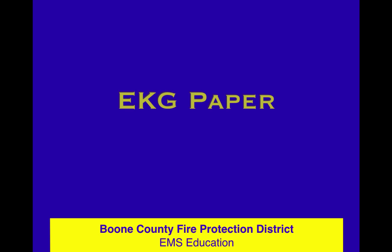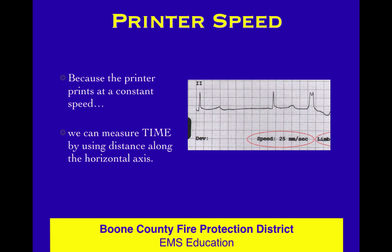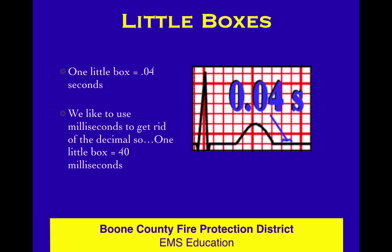The basis for rate determination is the EKG paper. The basic premise is that because the printer runs at a constant speed, if we measure distance along the paper, that actually turns out to be measuring time as well. All EKG printers we use in the field run at the same speed — for registry trivia, you might know that's 25 millimeters per second — which means that distance equals time, and we measure intervals, segments, and QRS widths in terms of time.